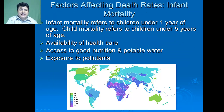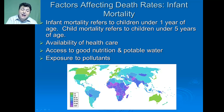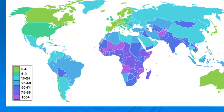Another factor that affects death rates is overall infant mortality. Infant mortality refers to the death of children under the age of one, while child mortality refers to the death of children under the age of five. Child and infant mortality is influenced by the availability of health care, access to good nutrition and healthy water, as well as exposure to pollutants. The United States has very low child and infant mortality, whereas in places like Asia and Sub-Saharan Africa those rates are much higher.